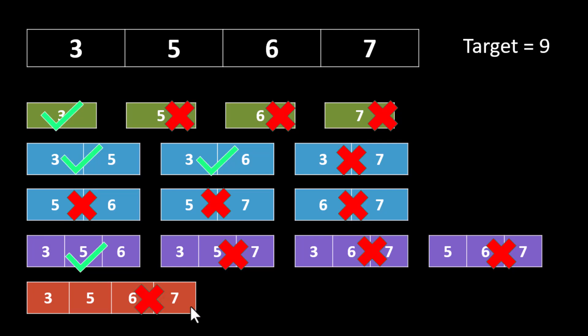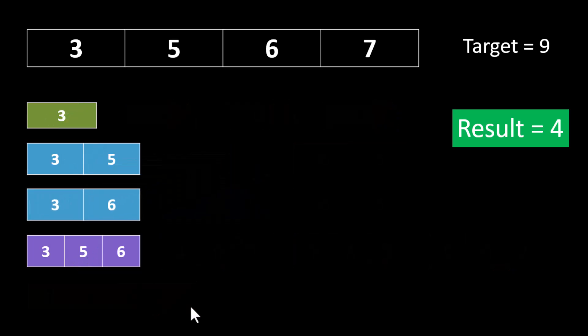So we see that only 4 subsequences follow the given criteria — that the minimum and maximum sum should be less than or equal to the target — and the result in this case becomes 4. Now looking at all valid subsequences, one common trait is that the value 3 is common in all of them, meaning the minimum should be 3. The maximum can go up to 6, since we know that the minimum plus maximum should be at most 9.